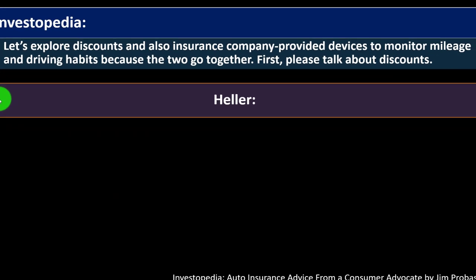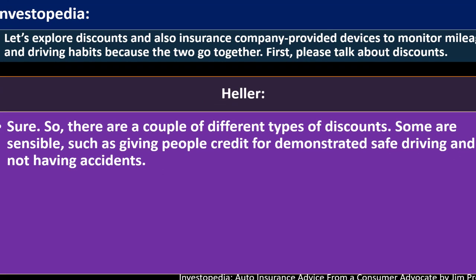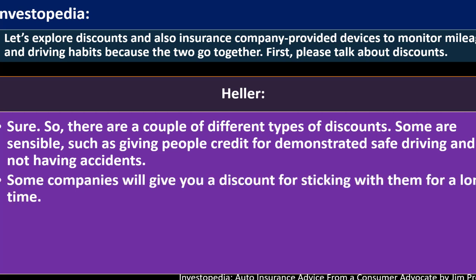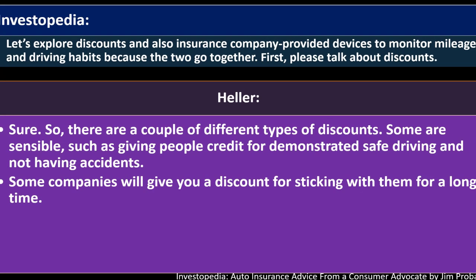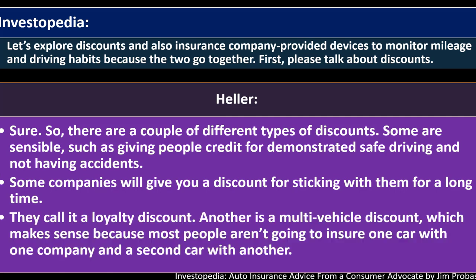Investopedia asking: let's explore discounts and also insurer-provided devices to monitor mileage and driving habits. First, please talk about discounts. Expert saying: there are a couple of different types of discounts. There are sensible ones, such as giving people credit for demonstrated safe driving and not having accidents — that's really just putting driving risk into the calculation. Some companies give a discount for sticking with them for a long time — a loyalty discount. There's also a multi-vehicle discount, which makes sense because most people aren't going to insure one car with one company and a second car with another.